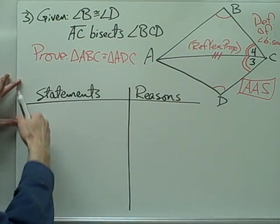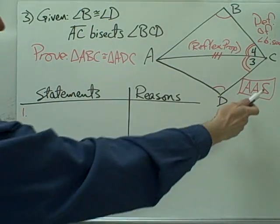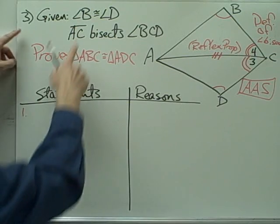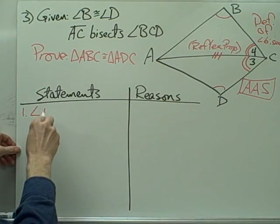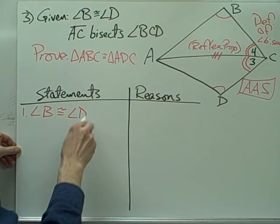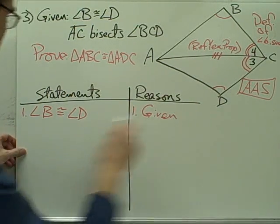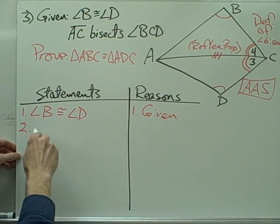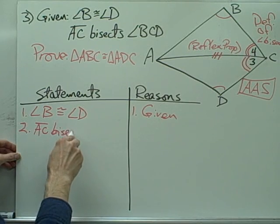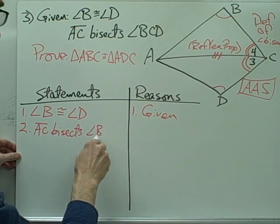So I'm going to use the angle-angle-side postulate in this case. Now I just need to write down all of my information and then finish up with the angle-angle-side postulate. Starting with my given statements: angle B is congruent to angle D — that's given.